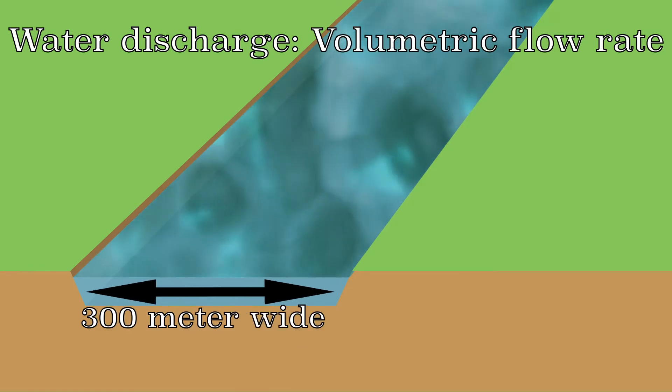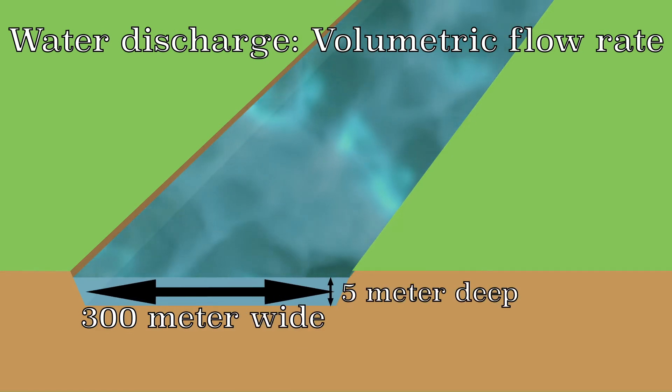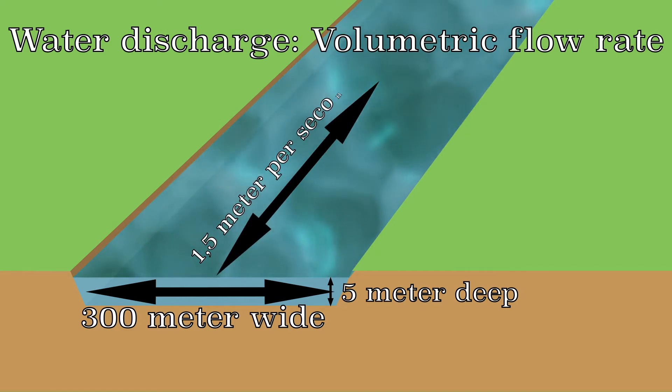The Rhine is 300 meters wide and 5 meters deep at the border between the Netherlands and Germany. The water flows 1.5 meters per second. So every second 300 times 5 times 1.5 is 2250 cubic meters removed.